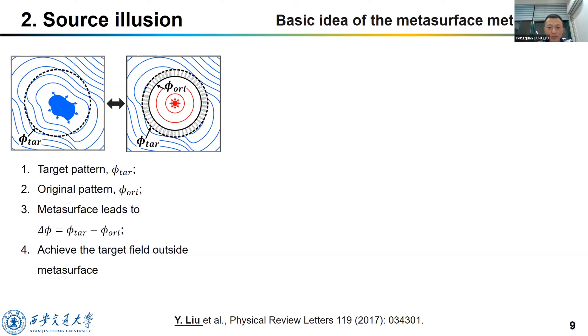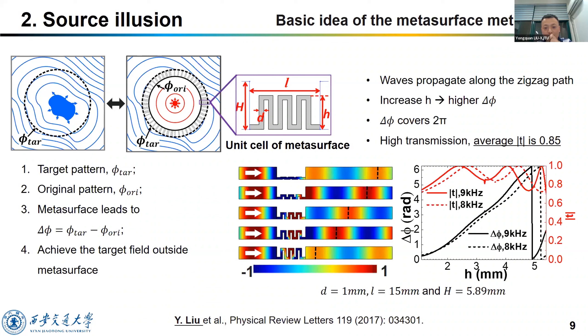How can we design the metasurface? After some attempts, we choose the zigzag structure as a unit cell of metasurface. By changing the geometric parameters B and H, we can tune the phase from zero to pi easily, actually.